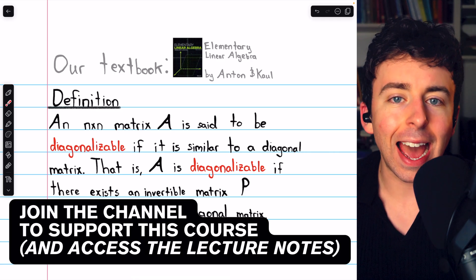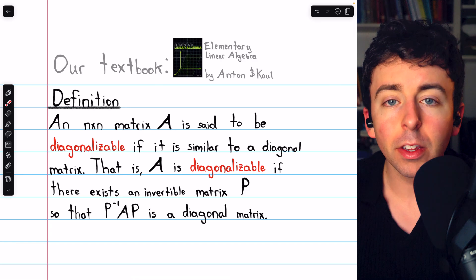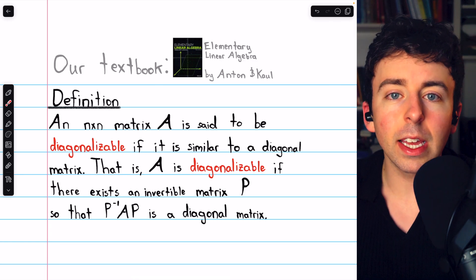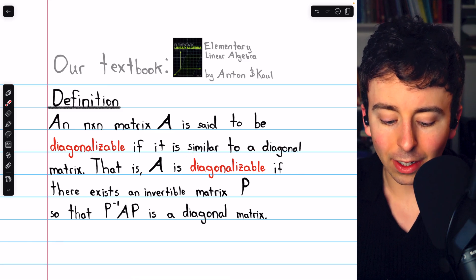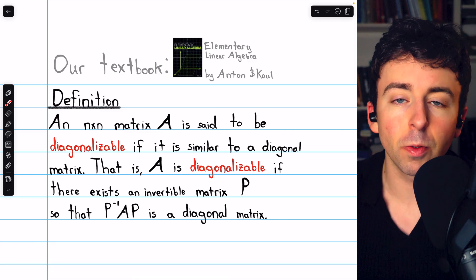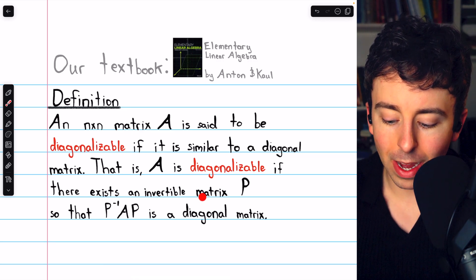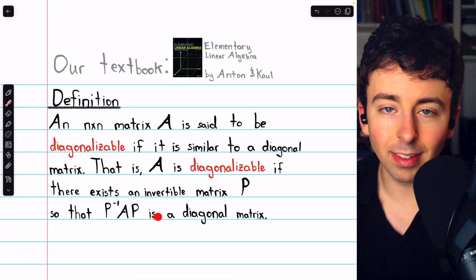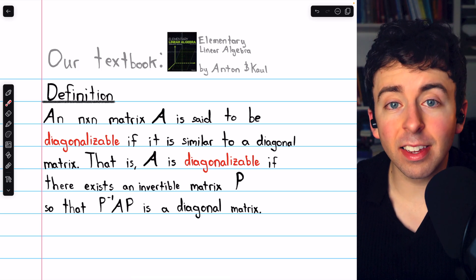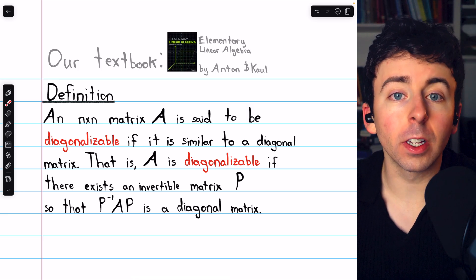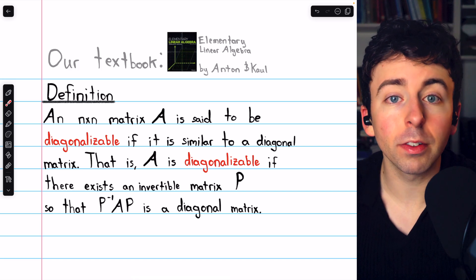We're going to go over what it means for a matrix to be diagonalizable, how to diagonalize a matrix, and how we can show that a matrix isn't diagonalizable. We say that an n by n matrix A is diagonalizable if it is similar to a diagonal matrix — that is, if there exists an invertible matrix P so that P inverse AP is a diagonal matrix. Similar matrices have a lot in common, so if A is similar to a diagonal matrix D, we can learn a lot about A by using the easier-to-work-with matrix D.